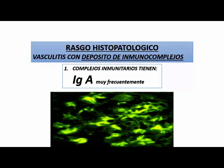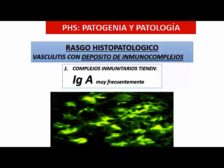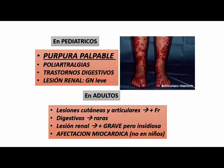Se hace el dosaje de IgA para el diagnóstico. En pediátricos es fundamentalmente una púrpura palpable, artralgias, trastorno digestivo y lesión renal. La lesión renal importantísima. Las lesiones cutáneas y articulares son más frecuentes, las digestivas son raras, la lesión renal es grave e insidiosa. Cuando el paciente con púrpura de Schönlein-Henoch hace lesión renal con nefritis, realmente es de difícil manejo.